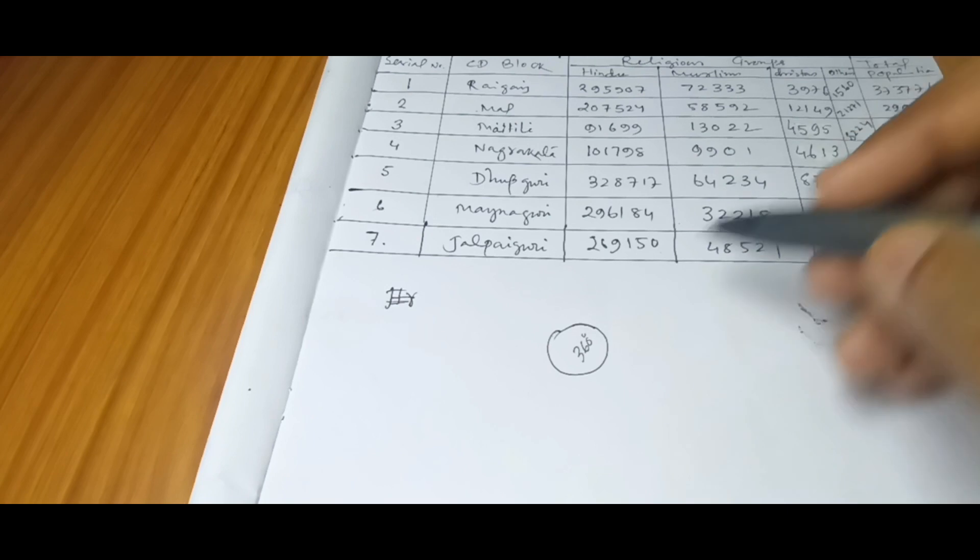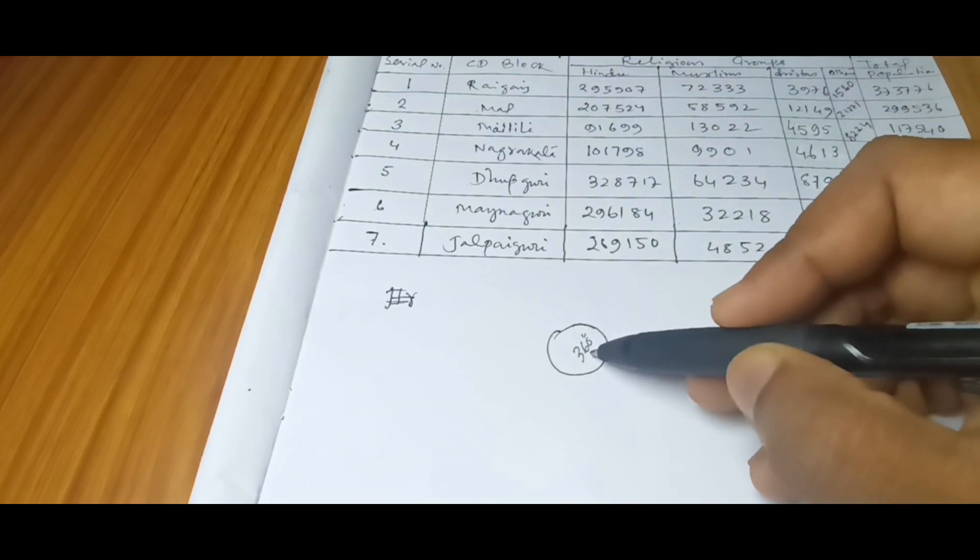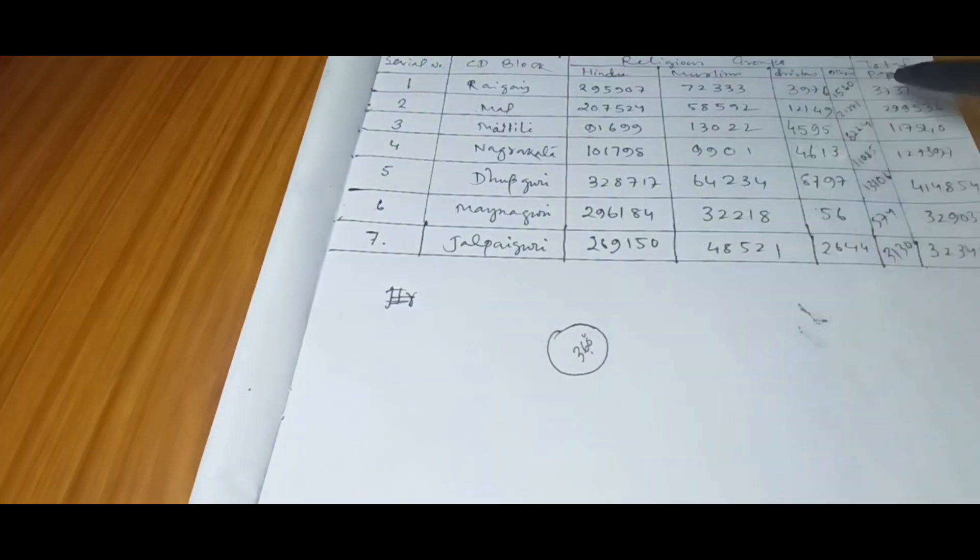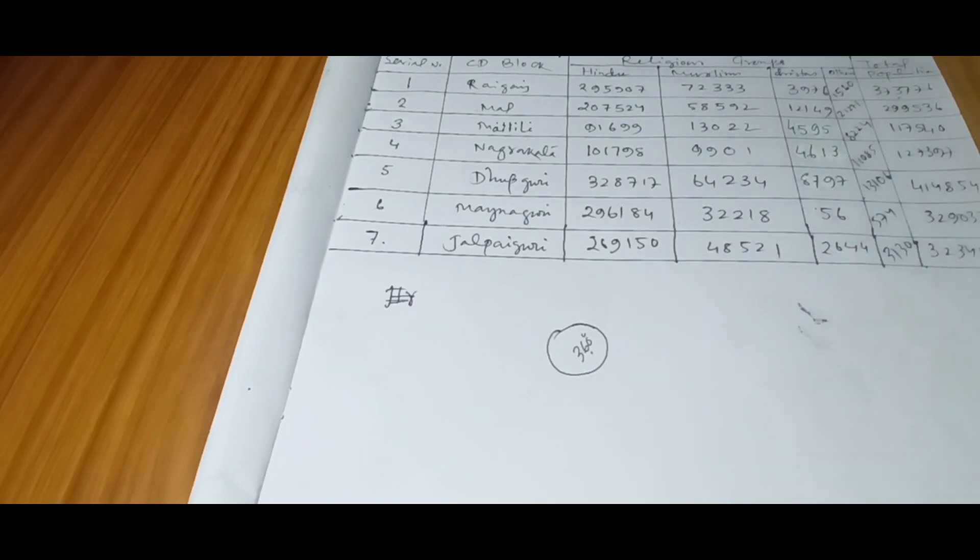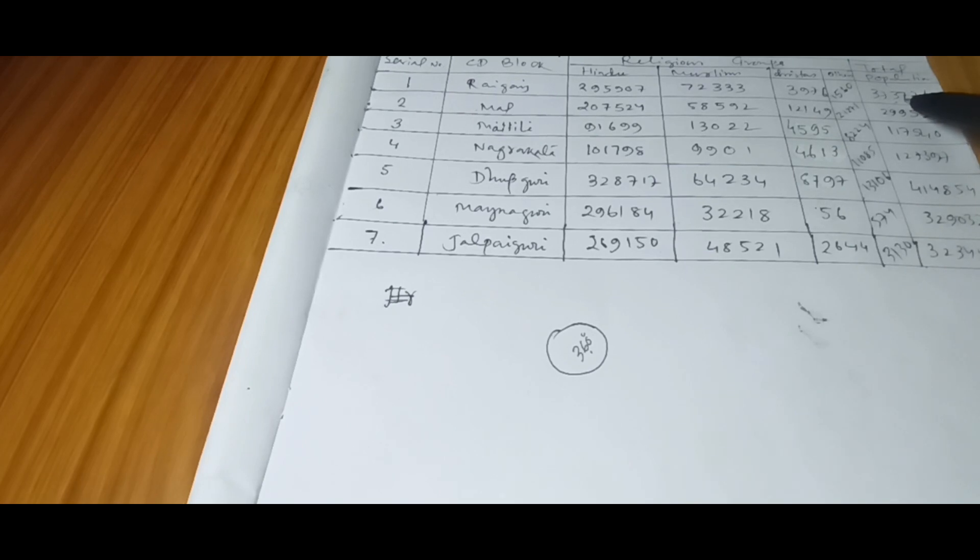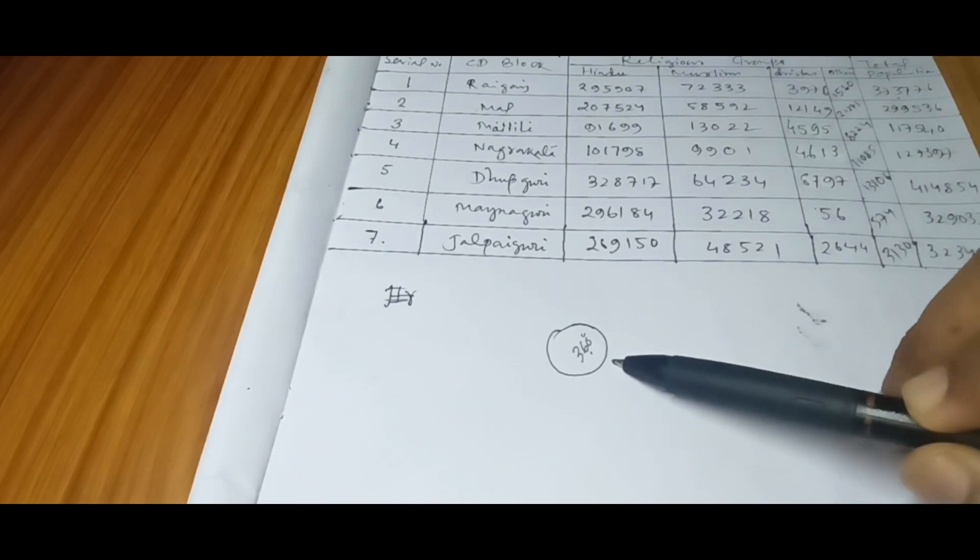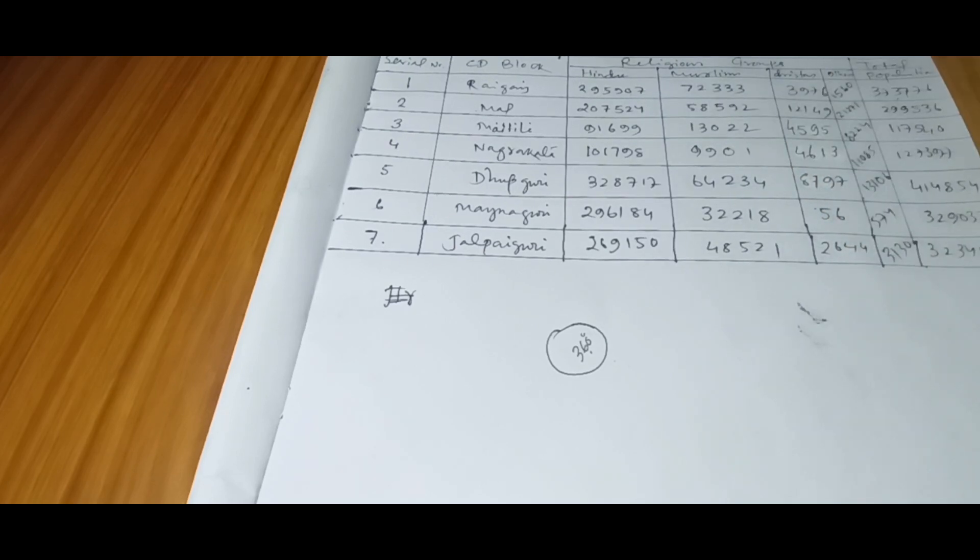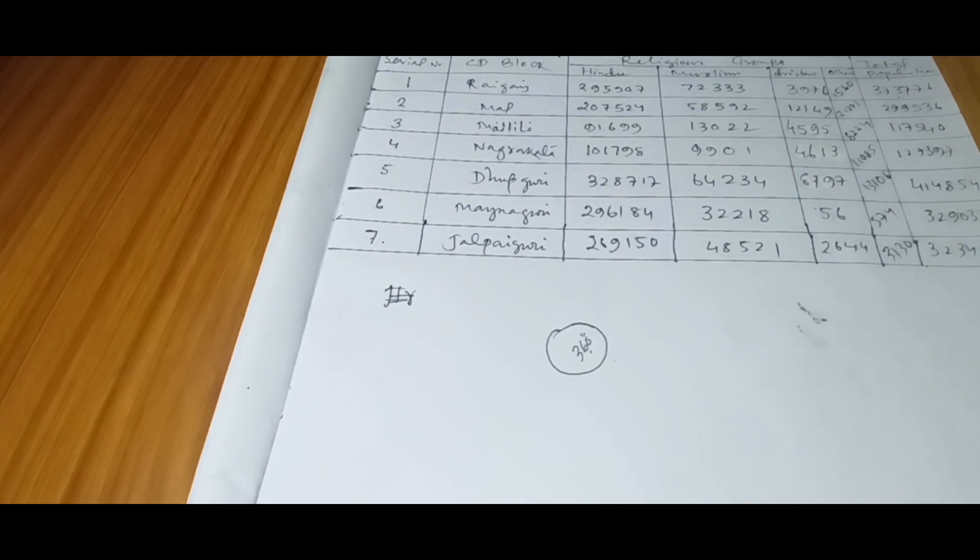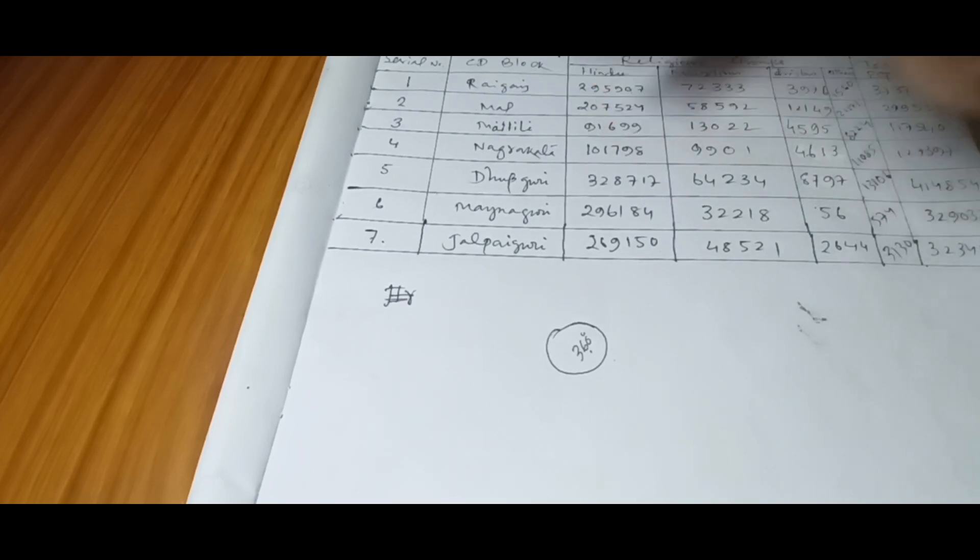So the total population will be representing the 360 degrees. If the total population is representing 360 degrees, then how much Hindu population is representing? Then you will get the angle from there. How much the Muslim religious groups is representing in the Rajganj block? This is the simple way we can calculate.